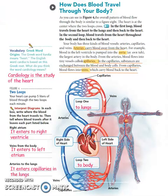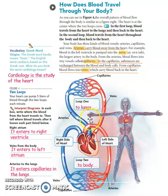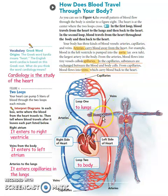Now let's go back to our topic. The key points for today: in the first loop, blood travels from the heart to the lungs. In the second loop, blood travels from the heart throughout the body and then back to the heart again. Think of it like a highway or road system for how blood travels.